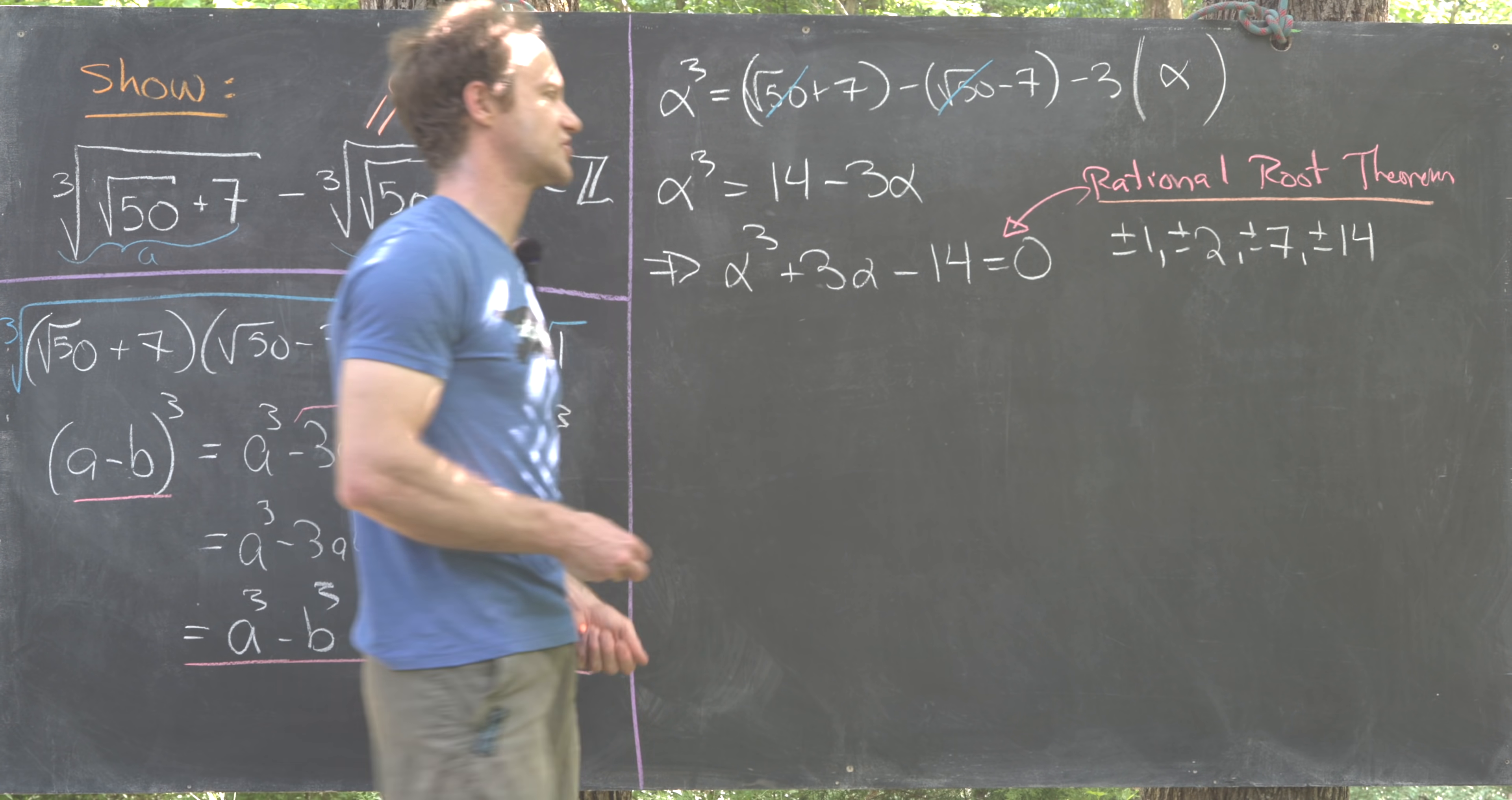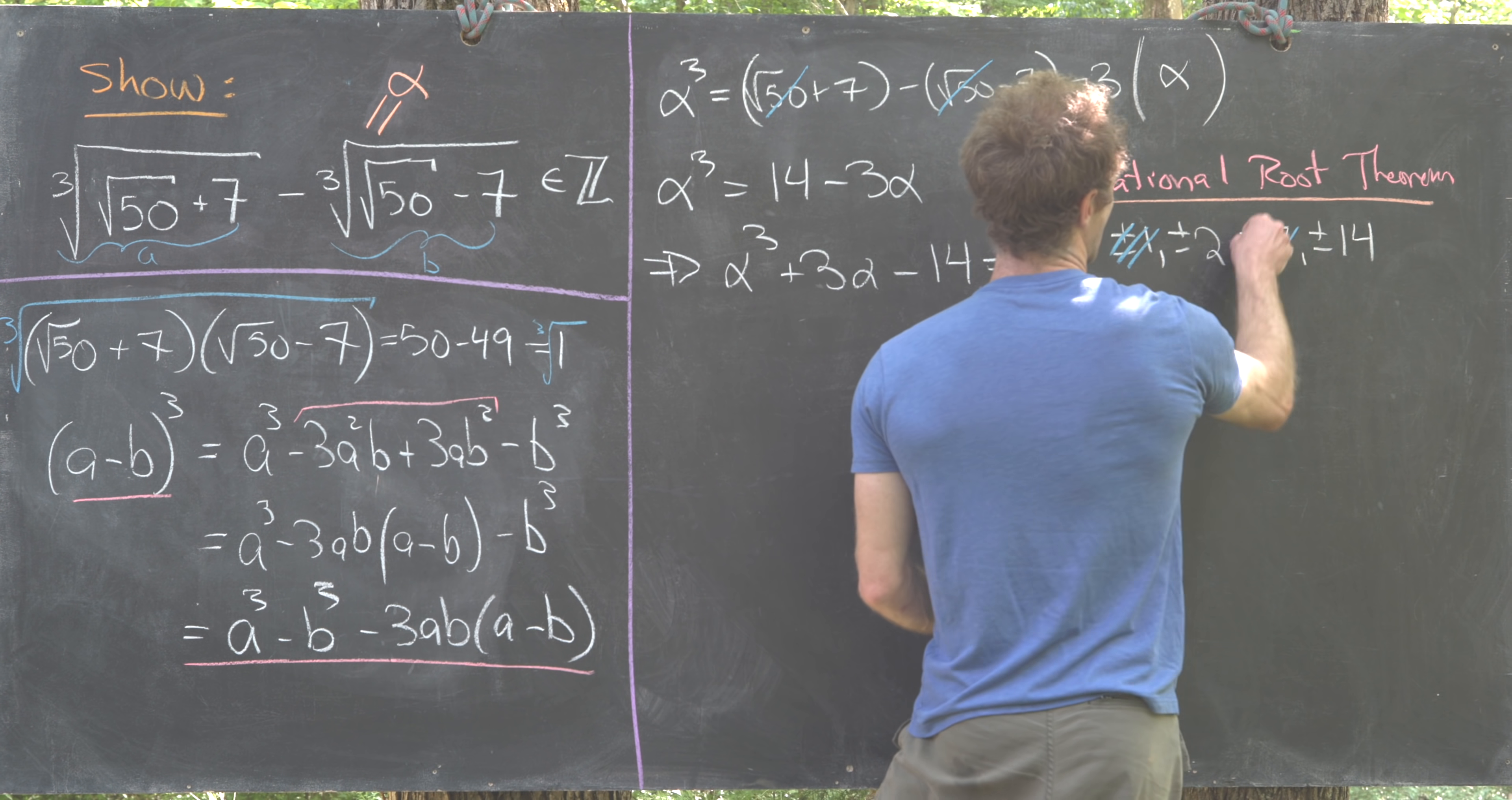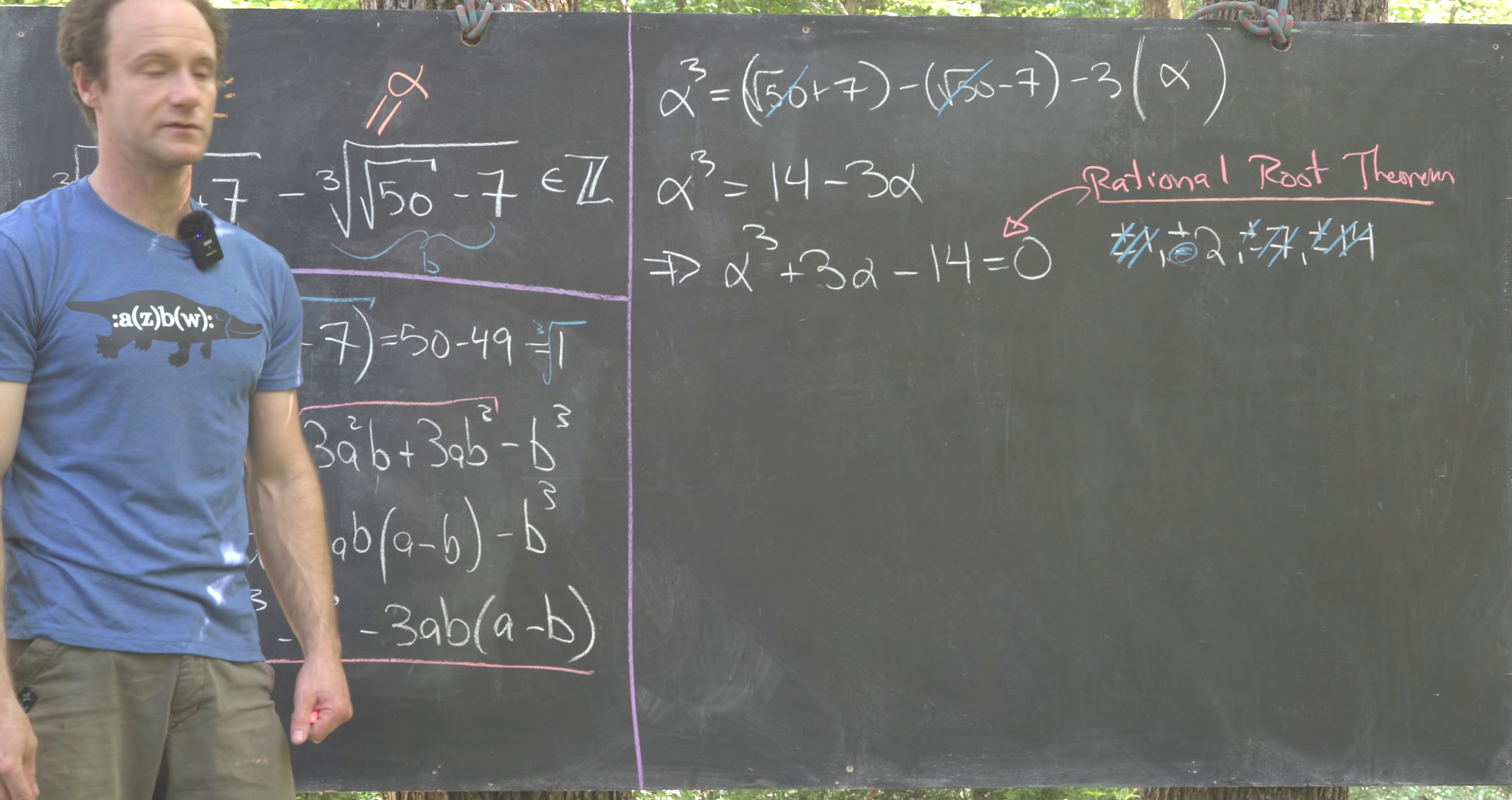I'll let you guys do the calculation but you'll notice that plus minus 1 are not roots, plus minus 7 are not roots, plus minus 14 is not a root, and negative 2 is not a root. So that means positive 2 is a root.